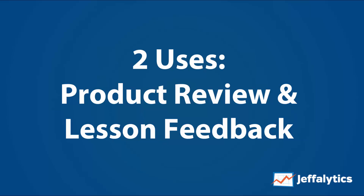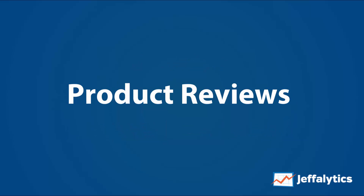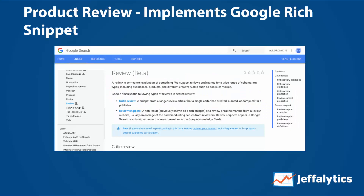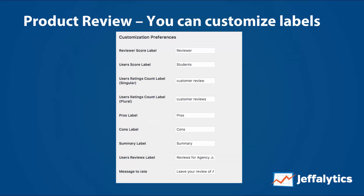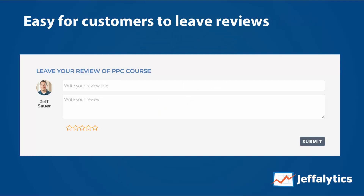There are two major uses we have for this plugin. First, product reviews. For product reviews we want several things covered: it has to work with Google rich snippets so Google can see the reviews and treat those ratings within Google search, which can help our search results. We can choose where to display it — posts, pages, or even courses and lessons within our online courses. We can customize labels to use our own business language with no code required. And it's easy for customers to leave reviews — our number of customers leaving reviews has risen exponentially since we added this.